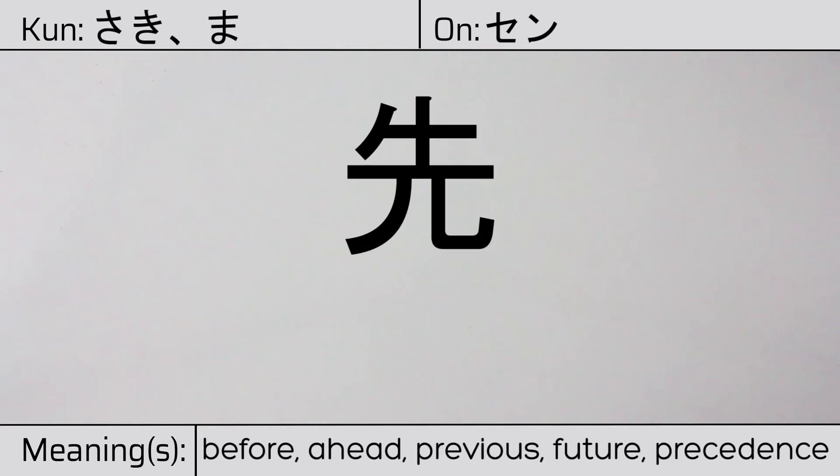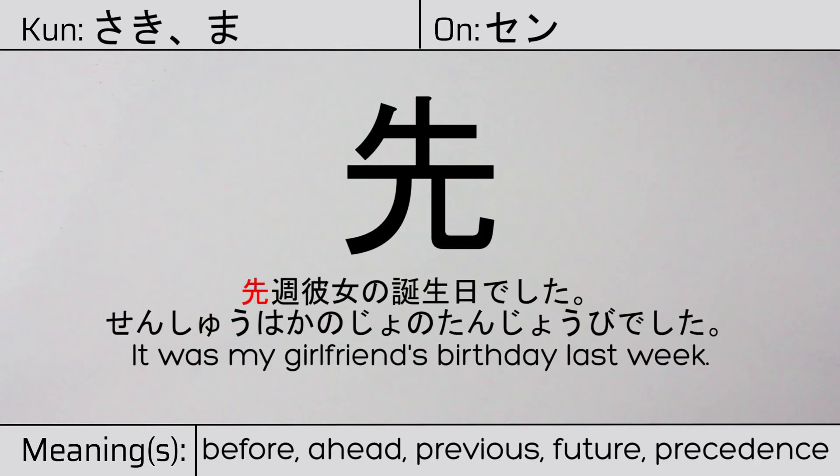Our example sentence is, 先週、彼女の誕生日でした。It was my girlfriend's birthday last week.